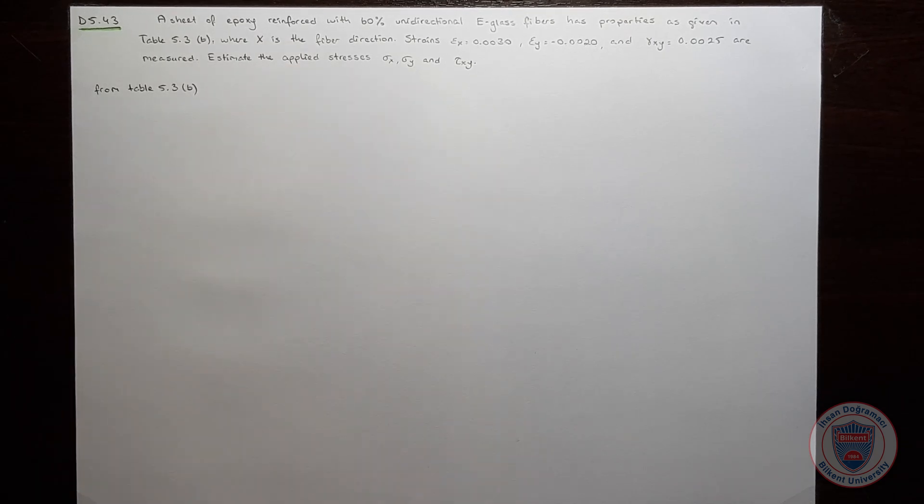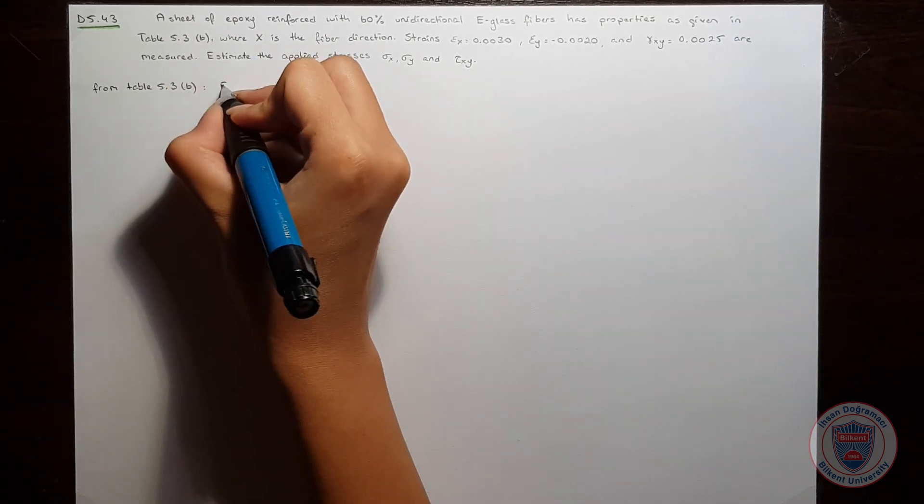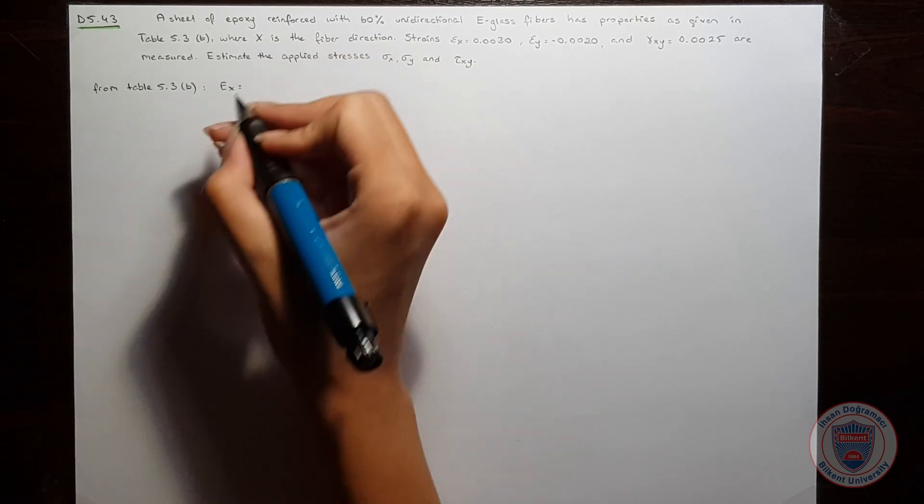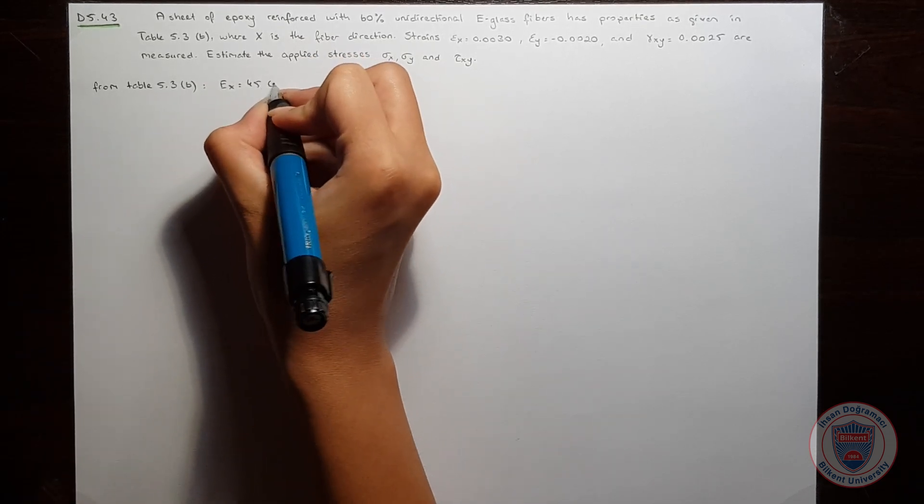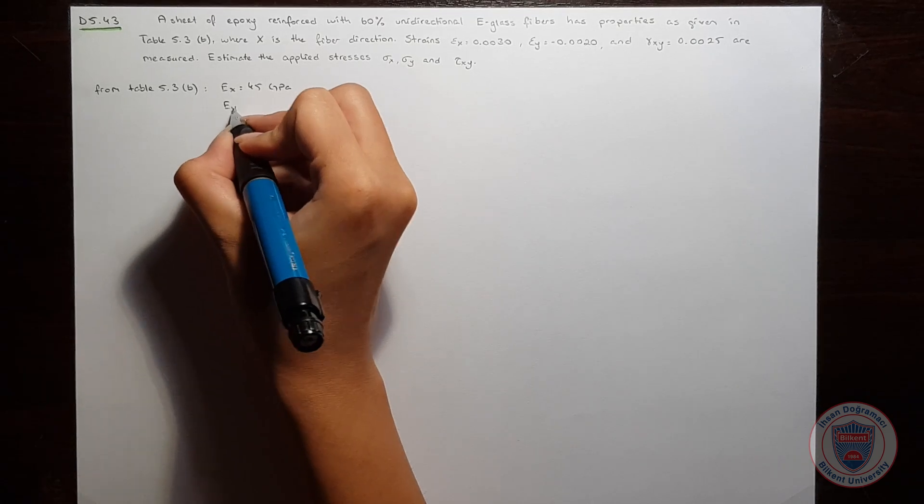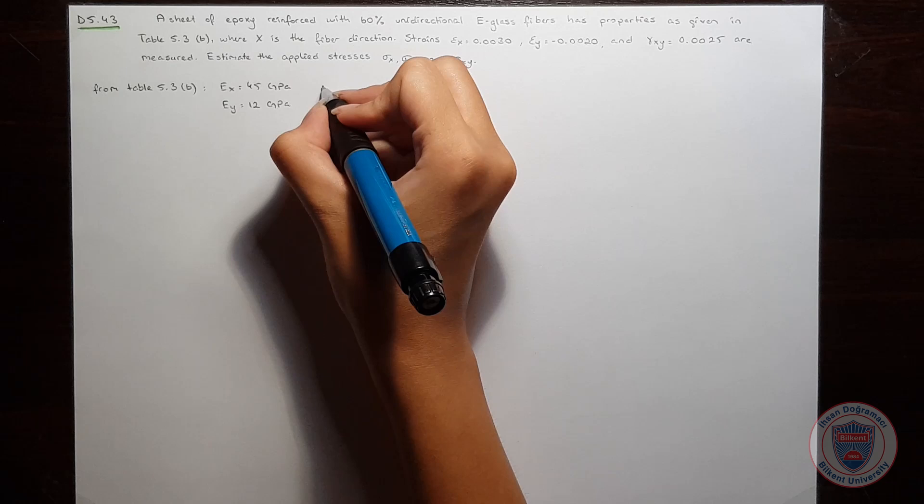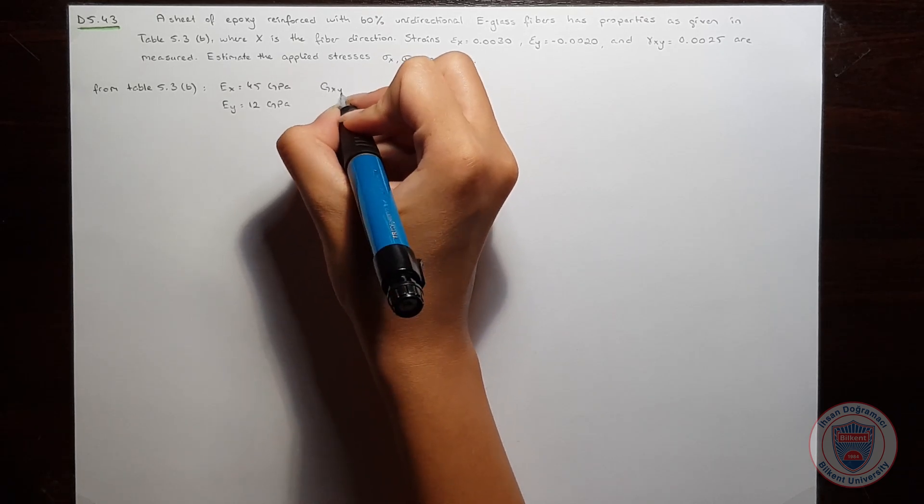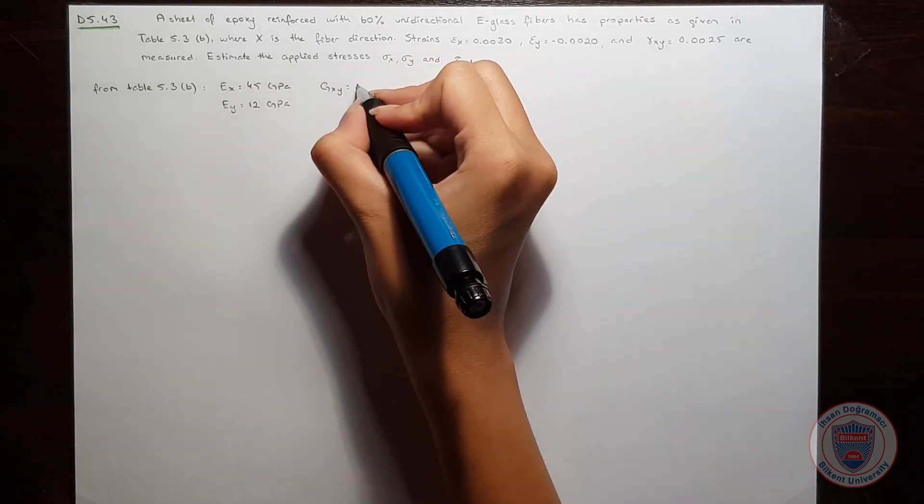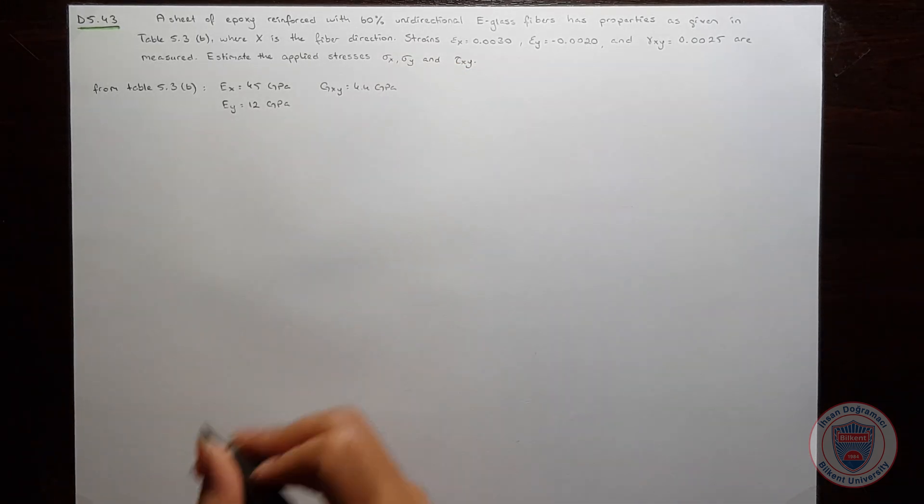From Table 5.3, we obtain EX as 45 GPa, EY as 12 GPa, Gxy as 4.4 GPa, and finally, νxy as 0.25.